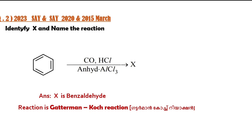We are going to talk about the reaction from Benzene: CO + HCl, in the presence of anhydrous aluminium chloride, gives Benzaldehyde. This is the Gattermann-Koch reaction.